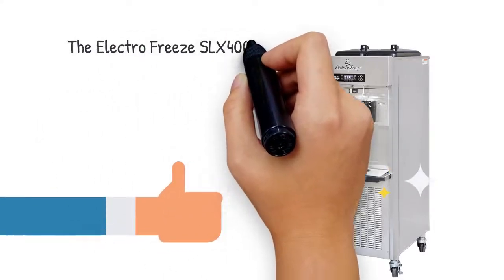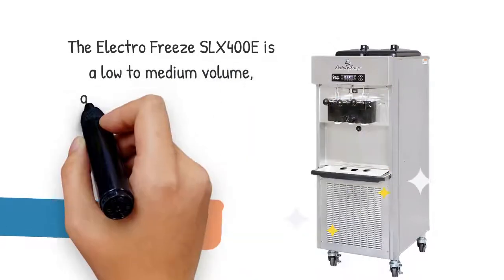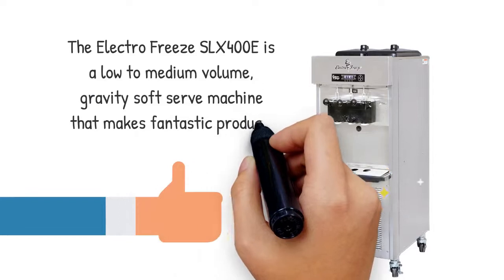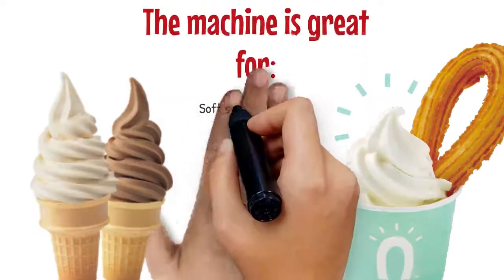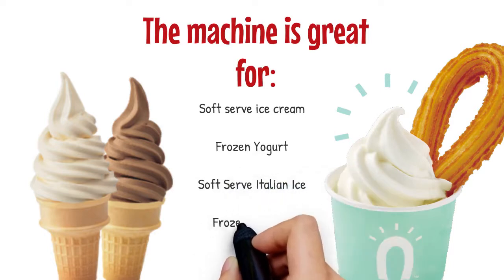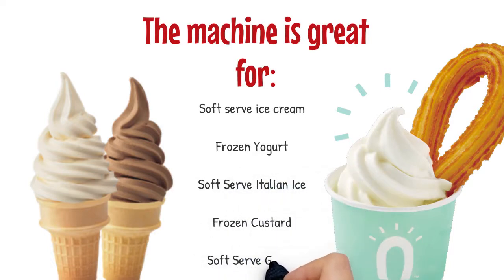The ElectroFreeze SLX400E is a low to medium volume gravity soft serve machine that makes fantastic product. The machine is great for soft serve ice cream, frozen yogurt, soft serve Italian ice, frozen custard, and soft serve gelato.